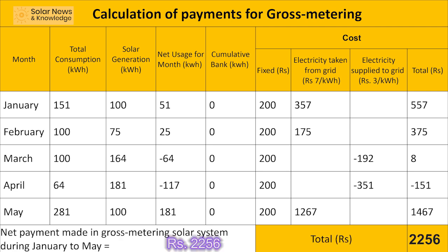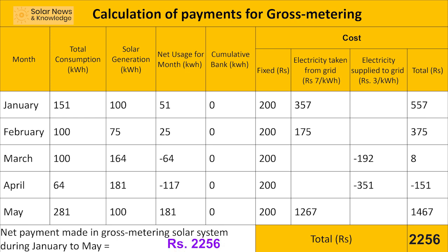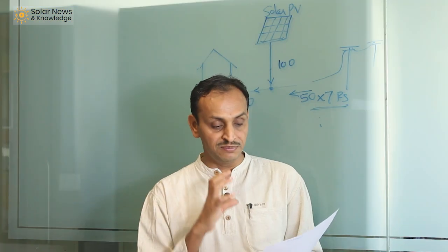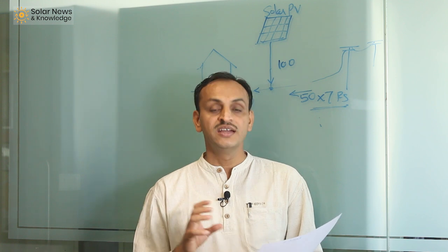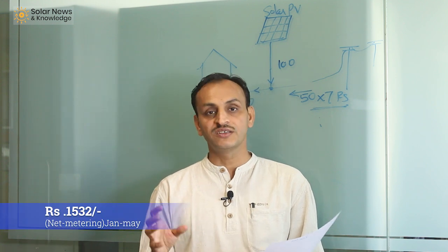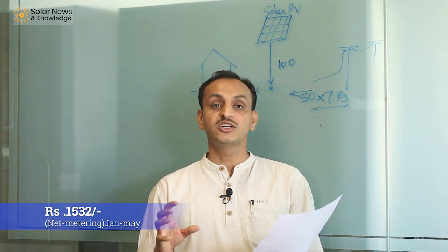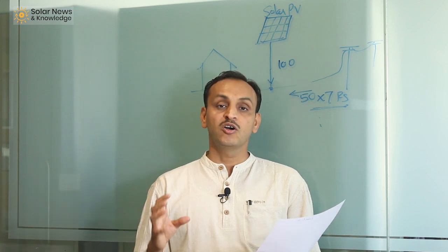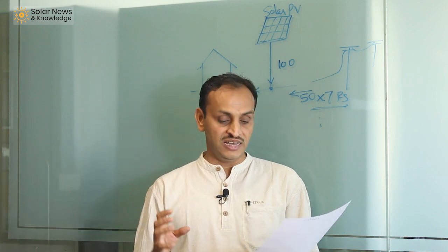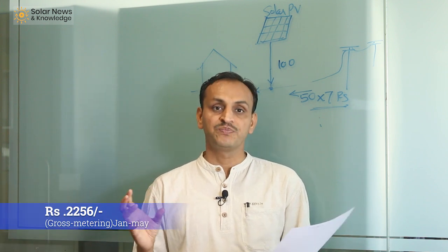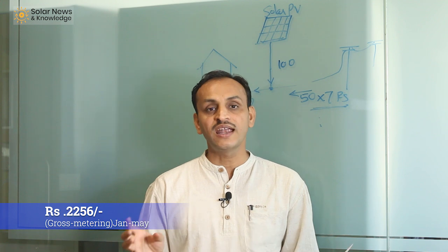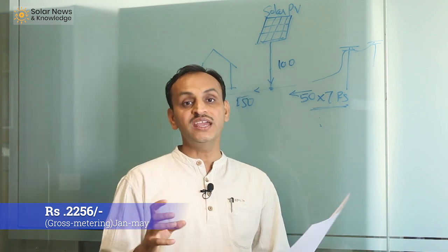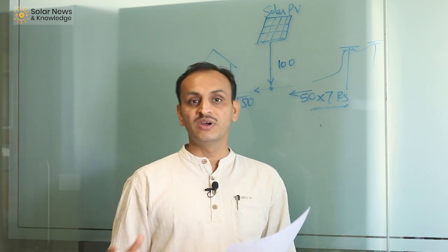Comparing the two: the total bill for Ramesh over the five months under net metering is 1532 rupees, while the total bill under gross metering or net billing is 2256 rupees. So Ramesh ends up paying significantly more money under gross metering for exactly the same solar system and exactly the same electricity consumption.